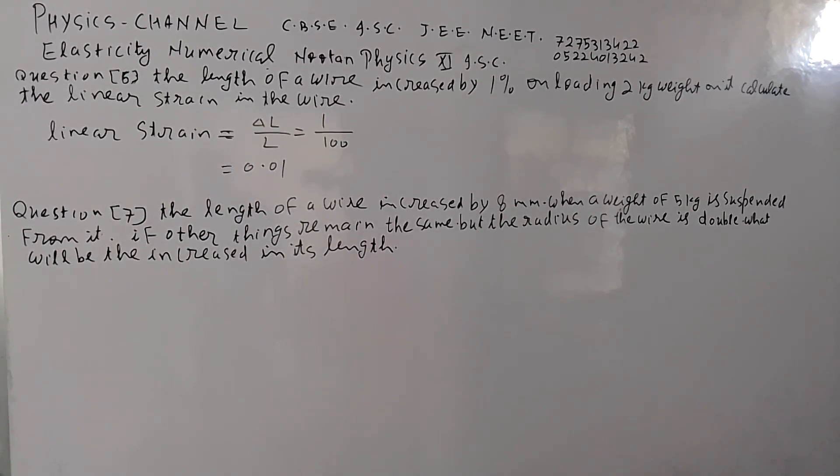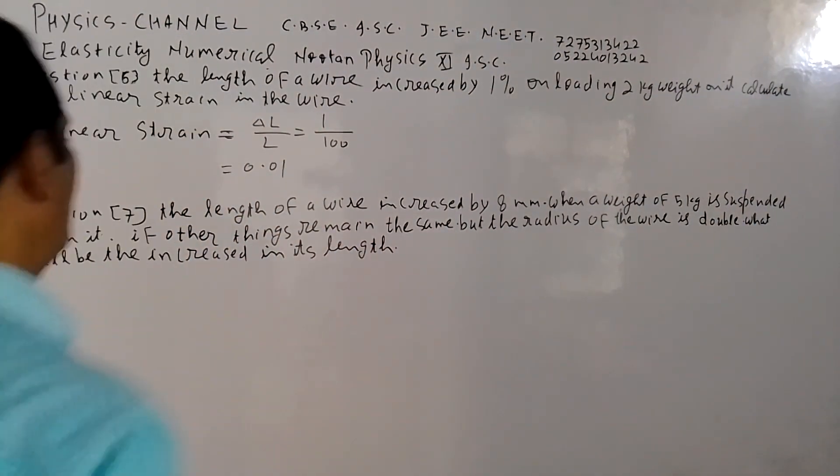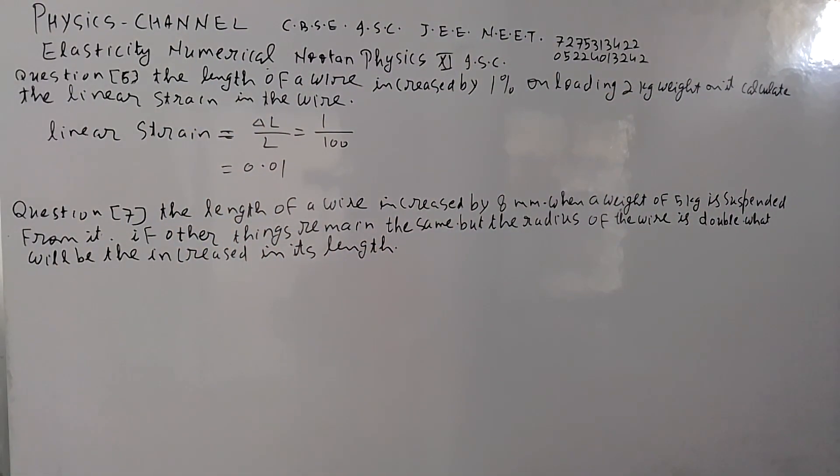Question number 7. The length of a wire is increased by 8 mm when a weight of 5 kg is suspended from it. If other things remain the same but the radius of the wire is doubled, what will be the increase in its length?